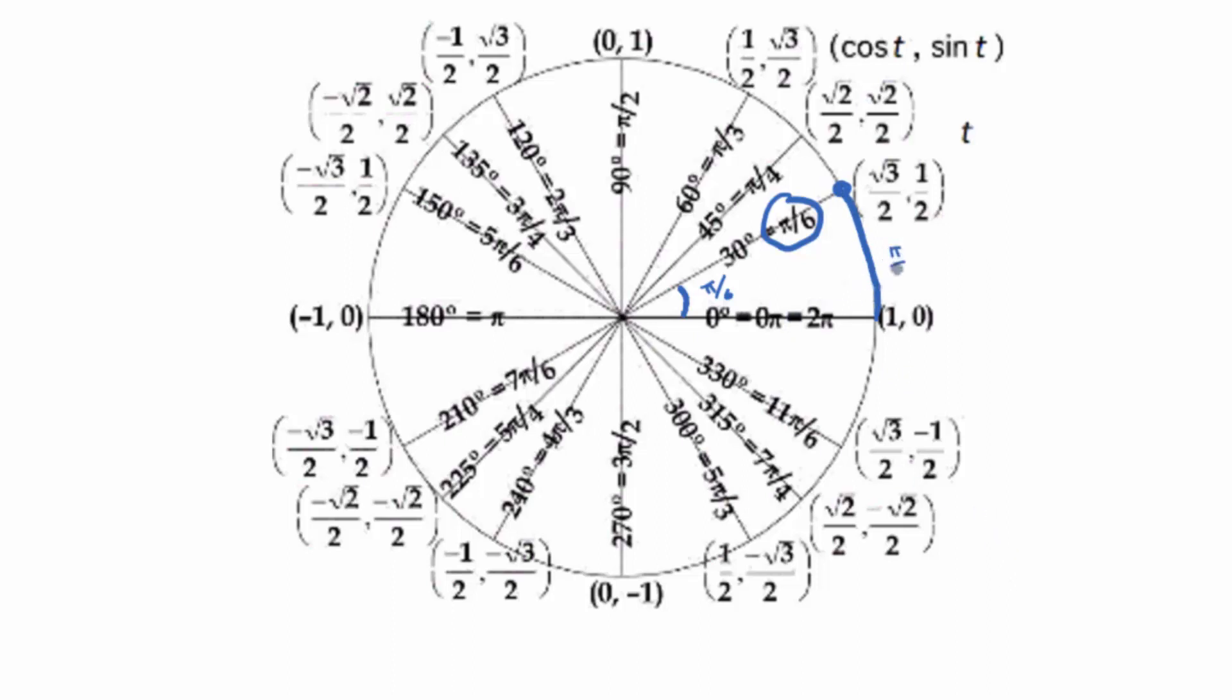This arc length is π/6 as well, so the input is π/6, the output is √3/2, 1/2. What this picture does for us is it tells us how to graph the sine and cosine in the Cartesian way. This is a different representation from what we're talking about today, but we can use it to get values for the sine and cosine graphs.